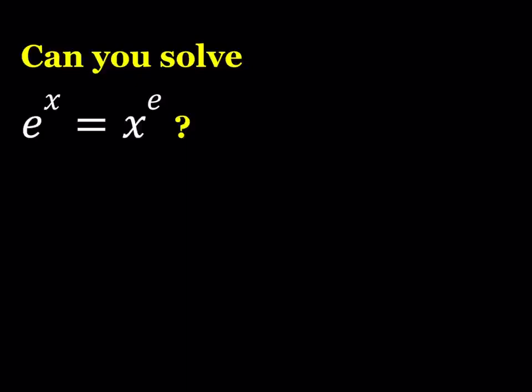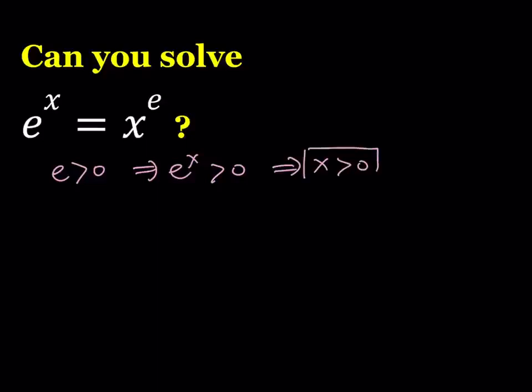I know at this point you probably have an obvious solution for this equation, but we're going to be solving it algebraically using a little bit of calculus as well. Notice that e is a positive number greater than 0, so e to the power x is also going to be greater than 0, which implies that the x value we're looking for needs to be positive. We don't really care about 0 or negative values because they're not going to satisfy our equation. So we're going to be looking for positive values for x.